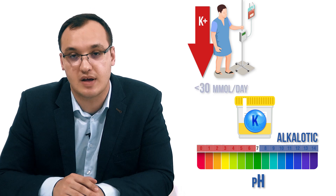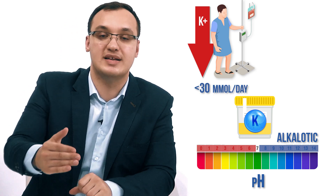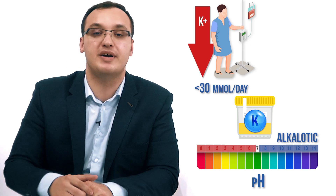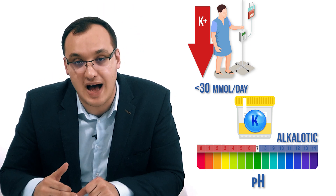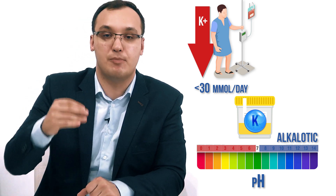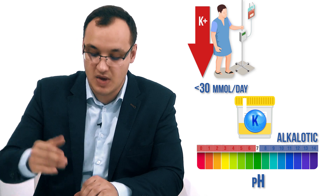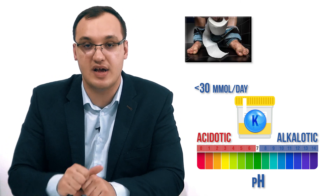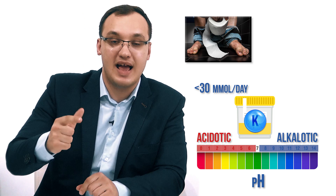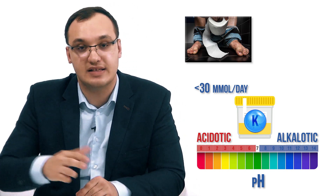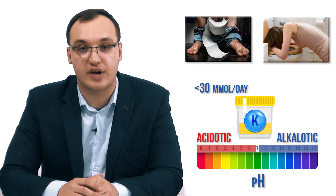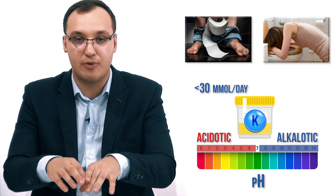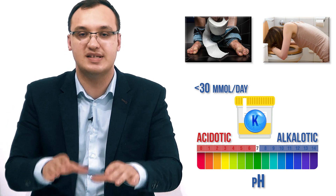Now for the other two scenarios — low potassium in the urine (less than 30 millimoles per day or a potassium-to-creatinine ratio less than 1.5): if it's acidotic, it's diarrhea; if it's alkalotic, it's vomiting. This is a useful algorithm, though it can be hard to remember.